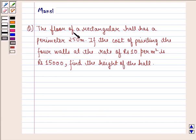The question says, the floor of a rectangular hall has a perimeter 250 meter. If the cost of painting the four walls at the rate of rupees 10 per meter square is rupees 15,000, find the height of the hall.